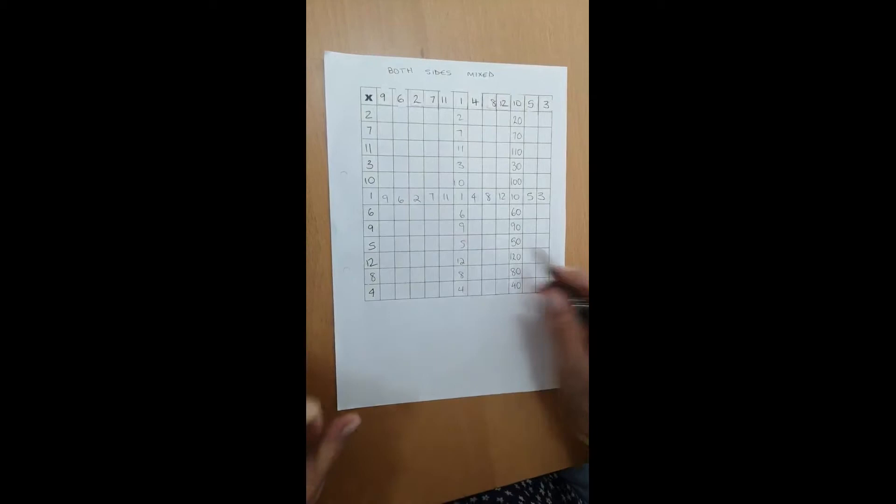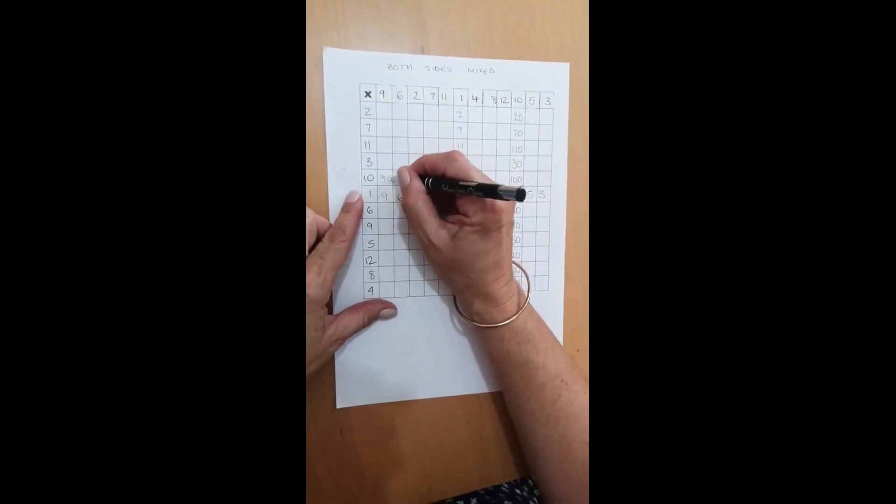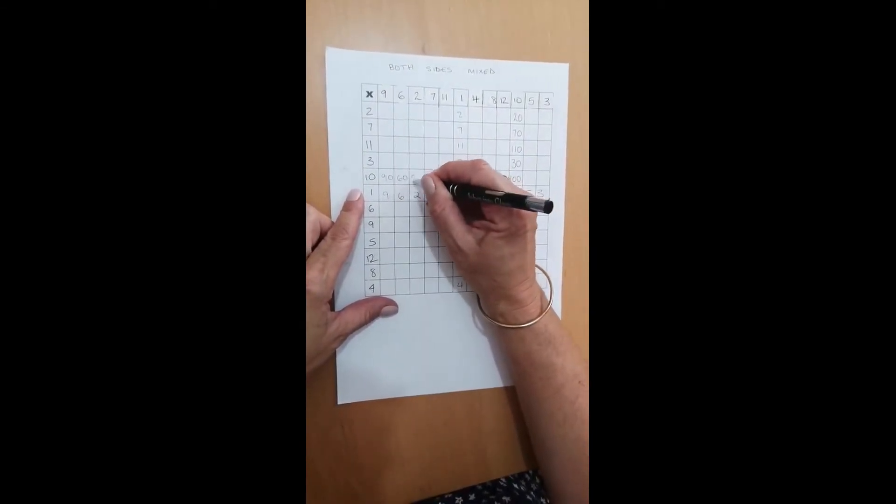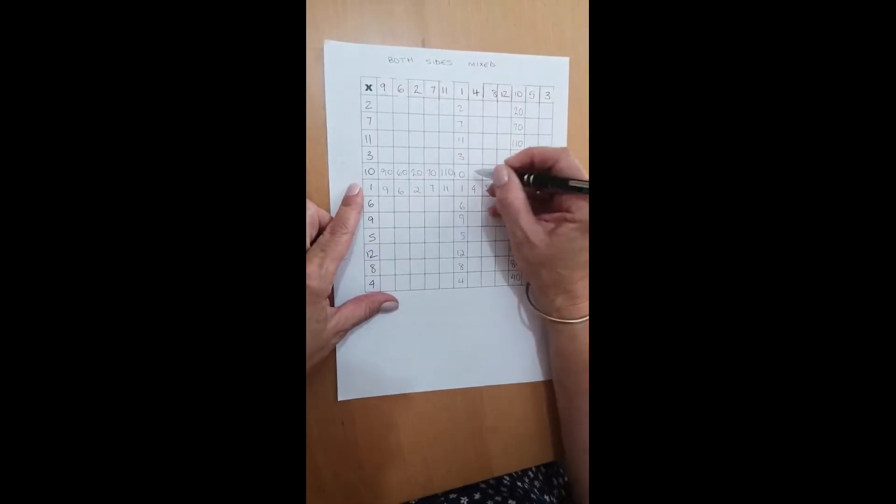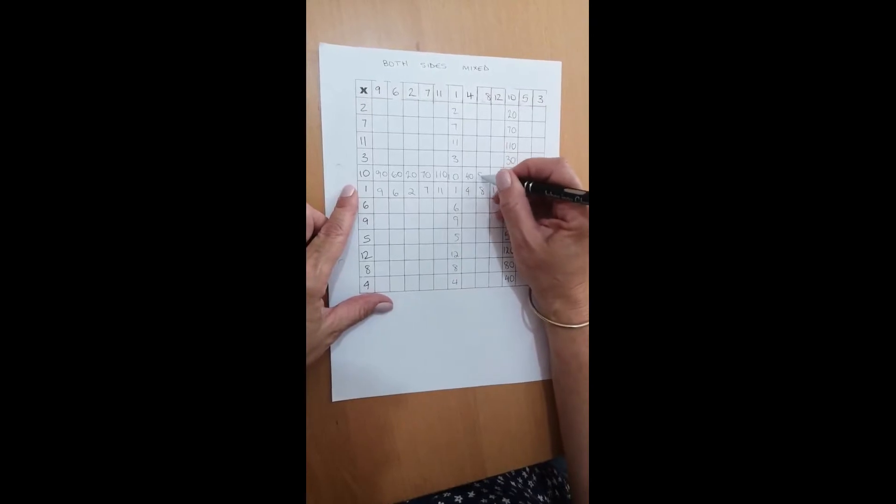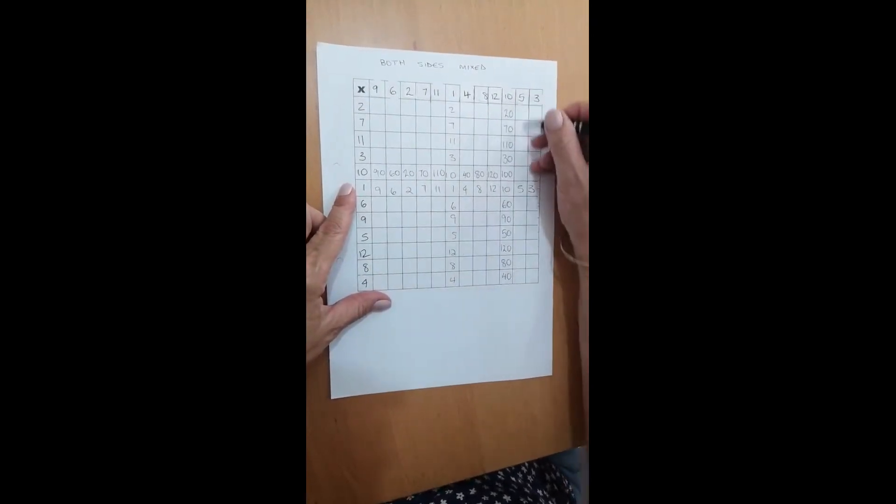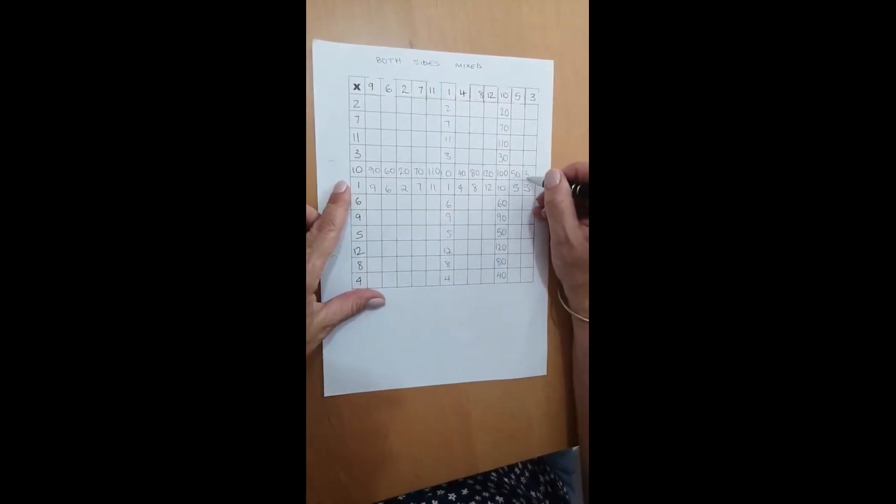Okay, and again this way. 90, 60, 20, 70, 110, 40, 80, 120, 50 and 30.